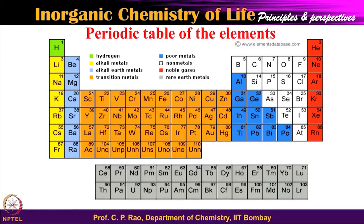Right now let us say yes, there are a large number of elements — in fact, today there are 118 elements, though this particular diagram shows 104. Of these elements, which ones are important in life processes? This we need to understand. So we will try to understand what kinds of elements in the periodic table are important.